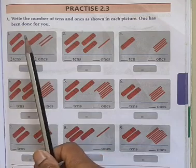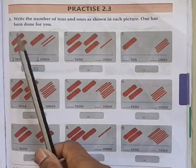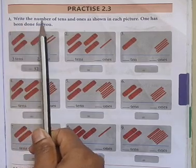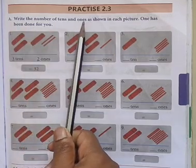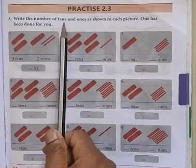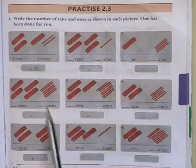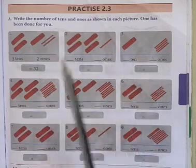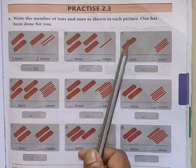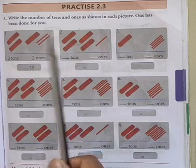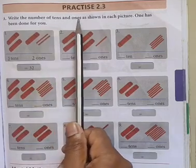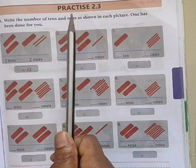Now we will start to solve this problem set. Practice it. A1: Write the number of tens and ones. What we have to do? Write the numbers of tens and ones as shown in each picture. One has been done for you. We just have to write the number of tens and ones — so easy!